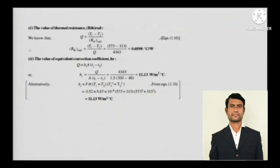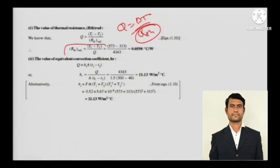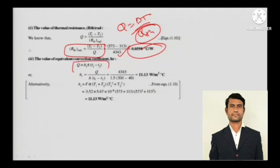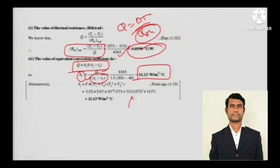For thermal resistance, use the standard format: R = (T1 − T2) / Q. All temperatures are given, so calculate accordingly. For the equivalent convection coefficient h_r: Q = h_r × A × (T1 − T2), so h_r = Q / (A × (T1 − T2)). This gives the radiation coefficient expressed in terms of Newton's law of cooling.